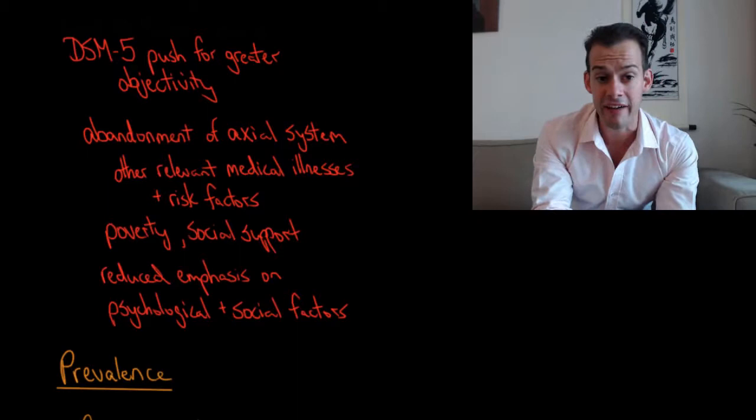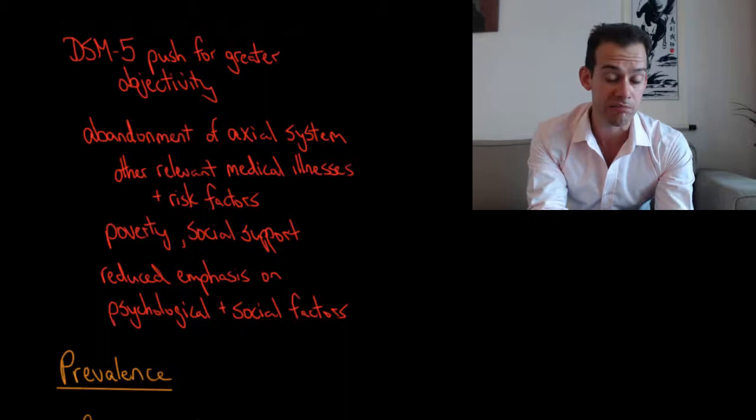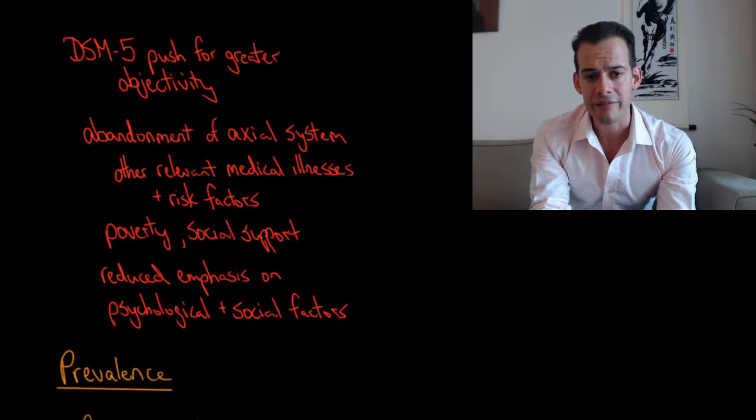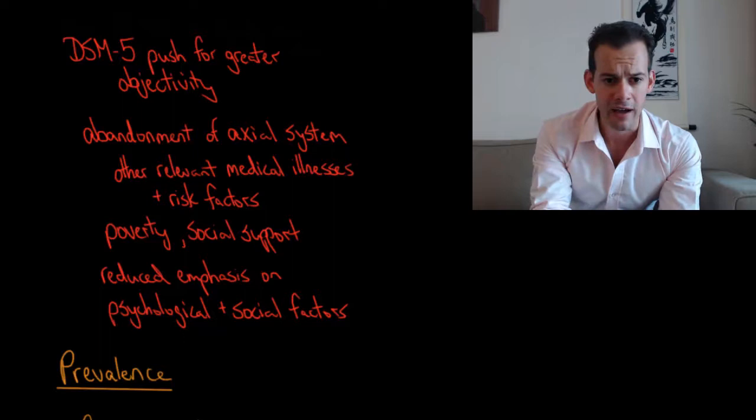And in the DSM-5 one of the major changes was the abandonment of the axial system that was used in previous editions of the DSM. So the axial system was a way of assessing relevant medical illnesses and other risk factors that might be associated with disorders and considering these in the diagnosis. And this was deemed to be rather subjective and this is why it was abandoned.